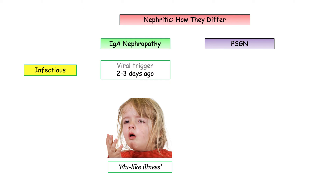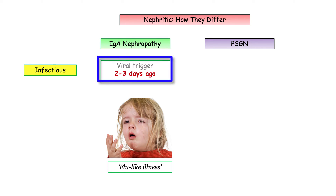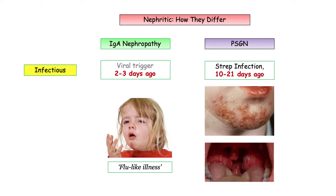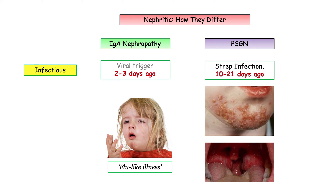The diagnostic criteria for IgA nephropathy is not dependent on the presence of infection, but it is a frequent trigger. On the boards, the majority of IgA nephropathy vignettes will include a respiratory infection described as a flu-like illness. Remember, a flu-like illness does not equal a streptococcal infection. The key point is the time course: in IgA nephropathy, the patient will become symptomatic two to three days after their index infection. In post-streptococcal glomerulonephritis, the kid will be described with an infectious episode two to three weeks prior to the onset of symptoms.